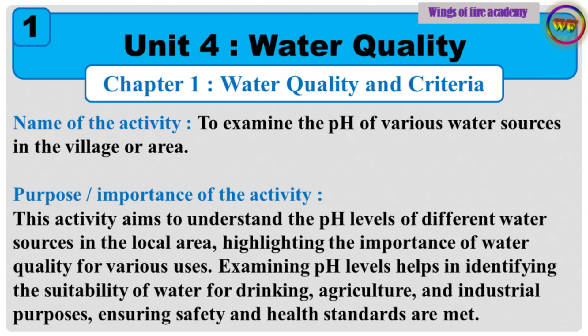Class 9th Water Security, Unit No. 4, Chapter No. 1 — Water Quality and Criteria. Name of the Activity: To examine the pH of various water sources in the village or area. Purpose/Importance of the Activity: This activity aims to understand the pH levels of different water sources in the local area, highlighting the importance of water quality for various uses. Examining pH levels helps in identifying the suitability of water for drinking, agriculture, and industrial purposes, ensuring safety and health standards are met.